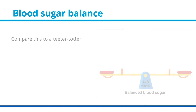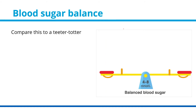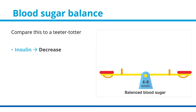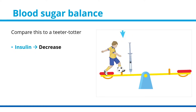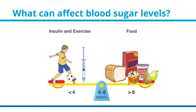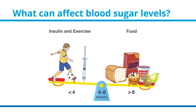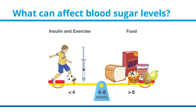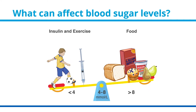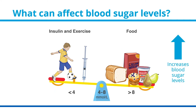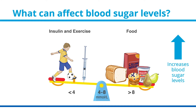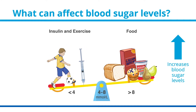Blood sugar balance can be compared to a teeter-totter in a children's playground. When you eat, blood sugar levels increase. When you give insulin, blood sugar levels decrease. And when you exercise, blood sugar levels also decrease. Understanding what factors impact blood sugar levels will help you keep these factors in balance on a day-to-day basis. Carbohydrates in the food you eat will cause your blood sugar level to increase. The more active you are, the more energy or glucose you use, causing your blood sugar level to decrease.